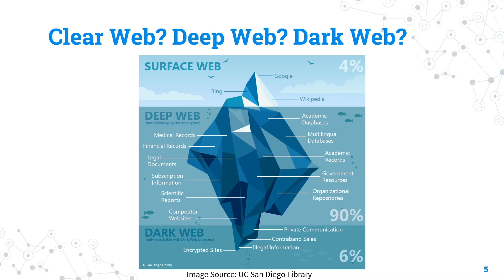The dark web is the part of the internet where you need special software to access it. It includes forums and marketplaces where people sell different kinds of things — drugs, weapons, research, books, and more. The majority of the internet is deep web, and people often confuse it with the dark web. Only about 6% of the internet is the dark web, while 80–90% is the deep web.